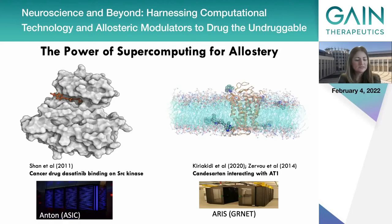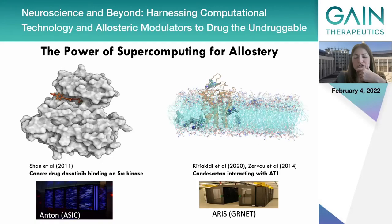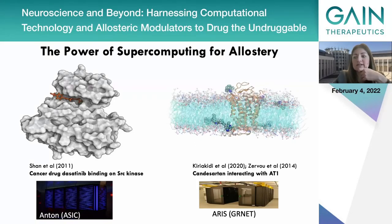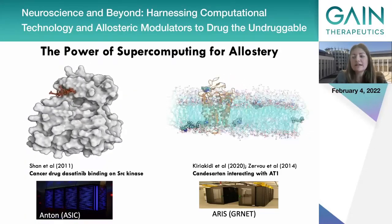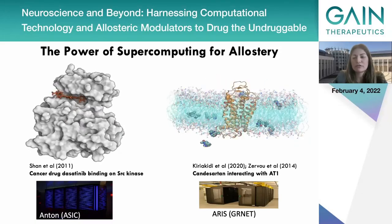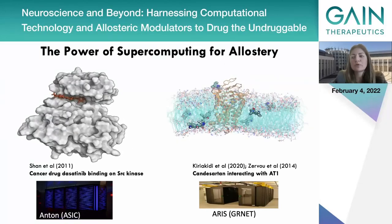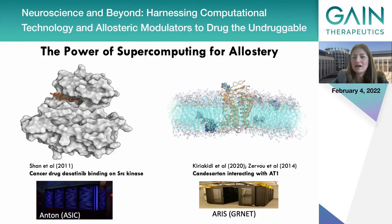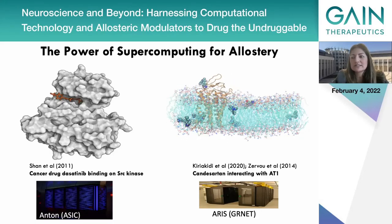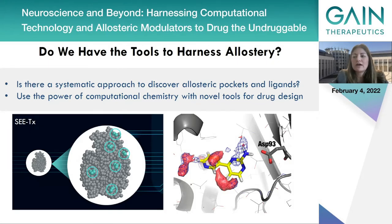Combining the power of supercomputing with structural data, several publications have shown that the binding sites of proteins can be discovered, as seen in molecular dynamics simulations where different ligands explore the surface of a protein to discover their binding pockets. These are brute force simulations that depend on supercomputing power. Aside from supercomputing, we can also harness allostery through computational chemistry — for example, using the CTX methodology to systematically discover new allosteric binding sites and predict their druggability.